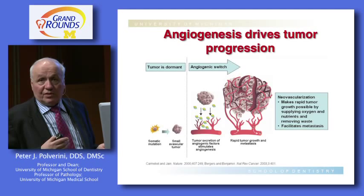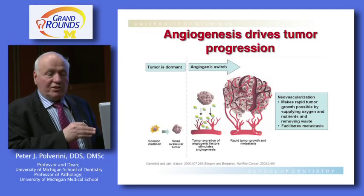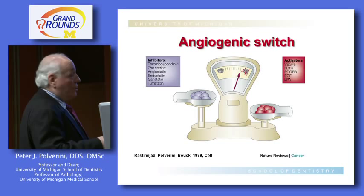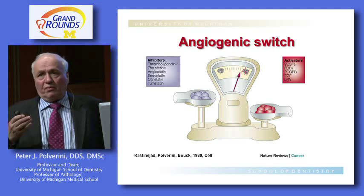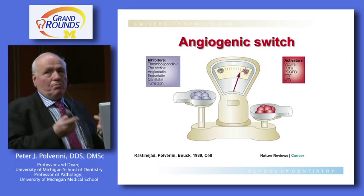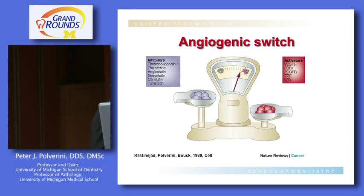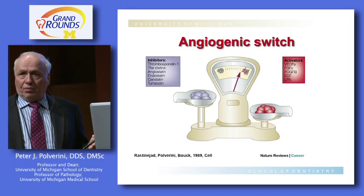The concept of the angiogenic switch was defined in a publication with Farzan Rustanajad and Noel Welk. The concept is that there's always a balance between inhibitors and stimulators of blood vessel growth. When that balance becomes disrupted — either through excessive production of stimulators overwhelming inhibitors, or through inhibitors being shut down — one gets sustained blood vessel growth.